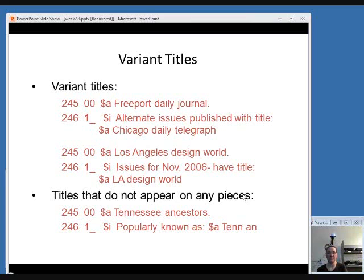You could also include titles that don't actually appear on the piece but are useful. For example, if 'Tennessee Ancestors' is popularly known as '10N', you can go ahead and include that. In this case, you would have subfield A for the title, but then you'd also have subfield I in which you would include a note that explains what this title is — it's not really any of the standard categories expressible using the indicators, but it's popularly known as. This is something you probably want to display in the record, so you would want a note as well as an added entry. Those are the fields that deal with title information in a serial record.